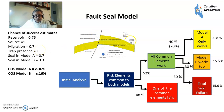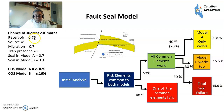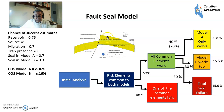If you're looking at model A only, you've got a 70% chance of the two seals working — so a 30% chance of failure and 70% chance of having some success. Looking at the risk elements common to both models — effectively the reservoir and migration — that gives 48%, a 52% chance of all the common elements working. There's a 30% chance of total seal failure, a 30% chance of sand on sand seal success, and a 40% chance of only model A working.